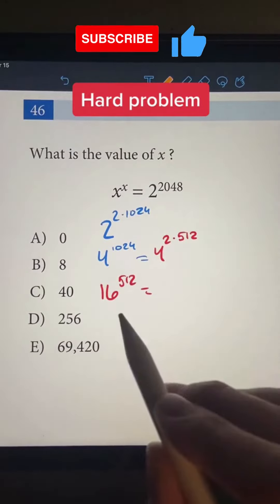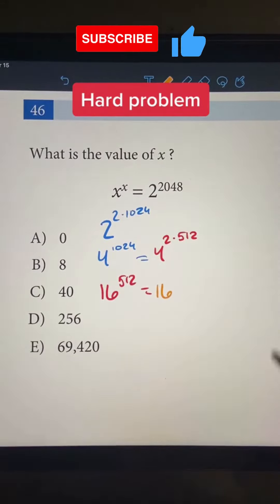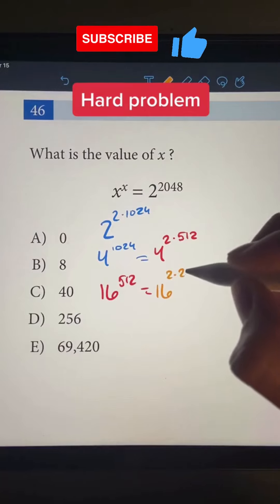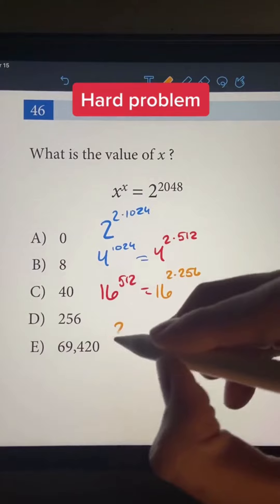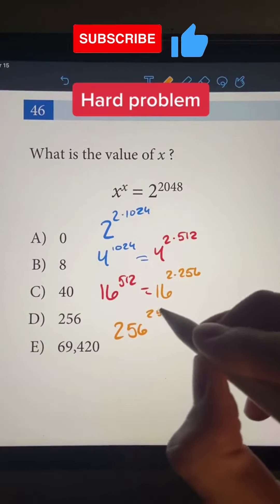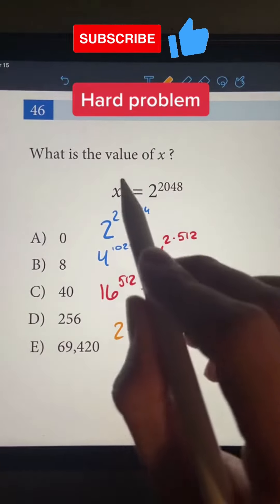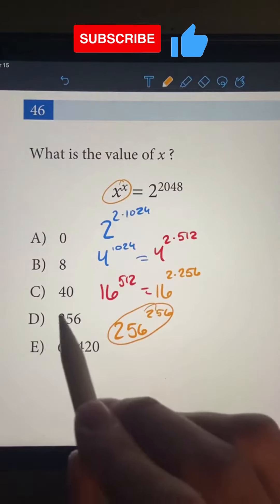Let's do this one more time. We have 16 to the power of 2 times 256. Our new base is 16 squared, which is 256, and we have 256 as our exponent. Just like that, we found a number to the power of itself, which is 256.